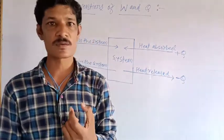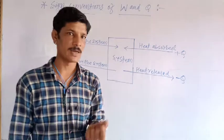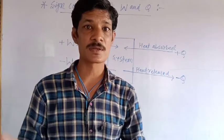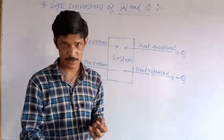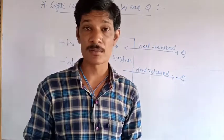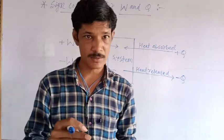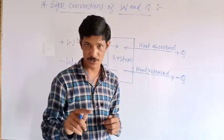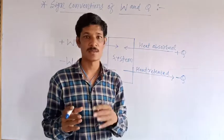The sign conventions of work and heat: the general rule is that any energy that enters the system has a positive value, and any energy that leaves the system and flows into the surroundings has a negative value. In the system, energy can be in the form of work or in the form of heat.